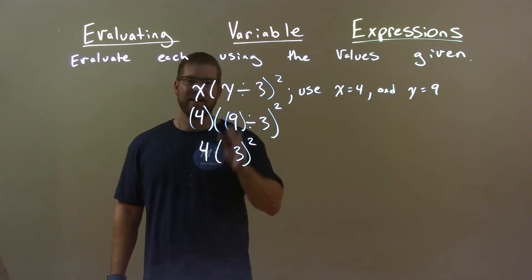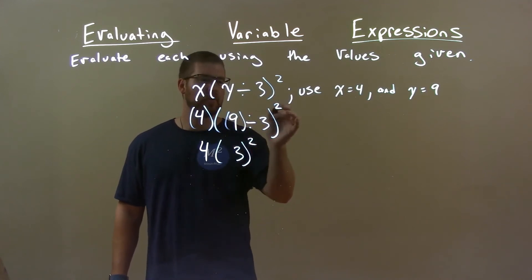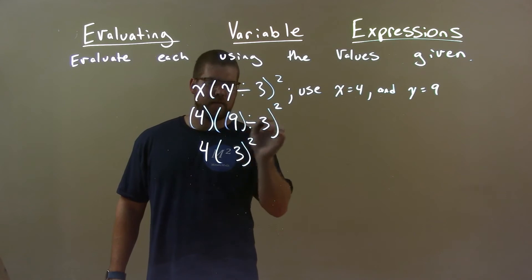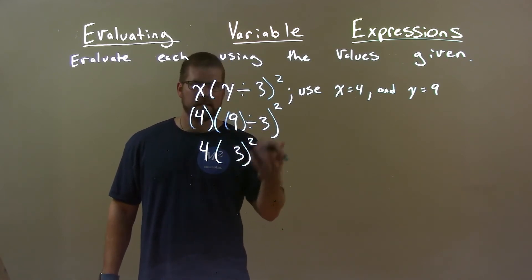Now, 3 squared is our next step. Be careful. Some people want to square this first. Inside parenthesis first. 9 divided by 3 is 3. So, then 3 squared is back to 9.